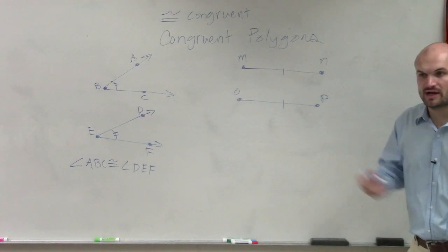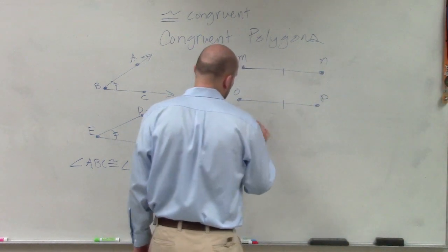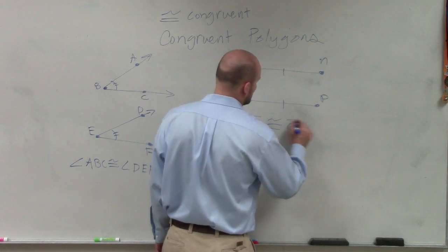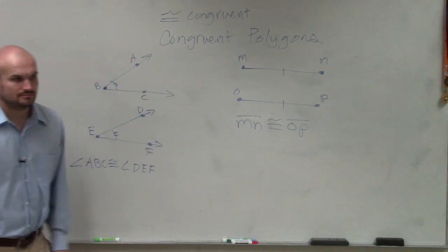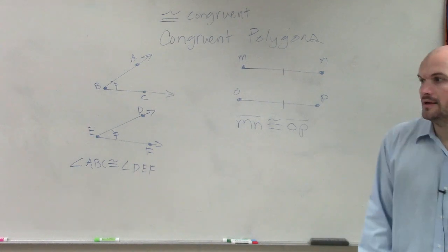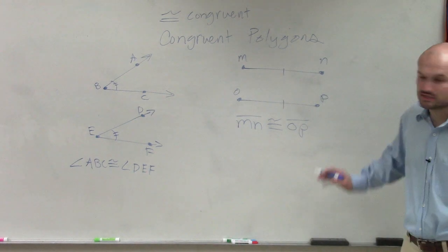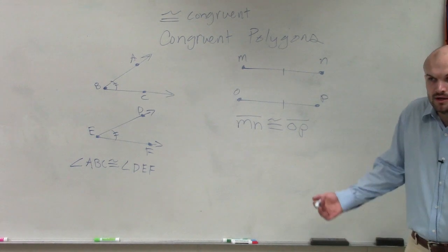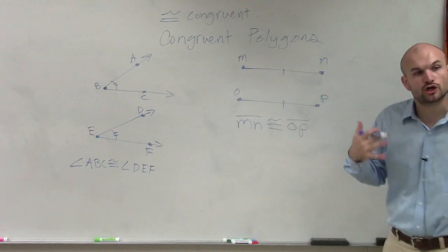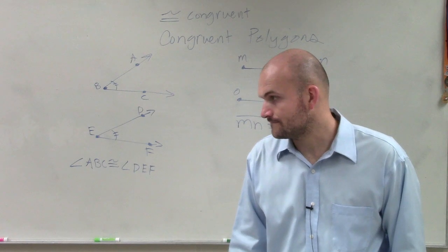Then, we also talked about when line segments are congruent. So we'd say MN is congruent to OP. Now, we don't know the length of these. These could be 13 inches, a foot. We don't know, but we're not concerned about this. The only thing we know is since they both share one tick mark, we know that they're congruent in measure.